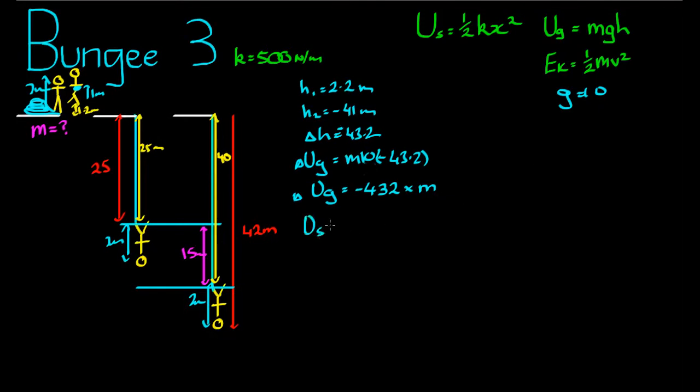So the energy stored in the spring relies on K and X. X is equal to 15. K is equal to 500. So we find the energy stored in that spring, 0.5 times 500 times 15 squared comes to 56,250. That is the energy which is stored in the spring.